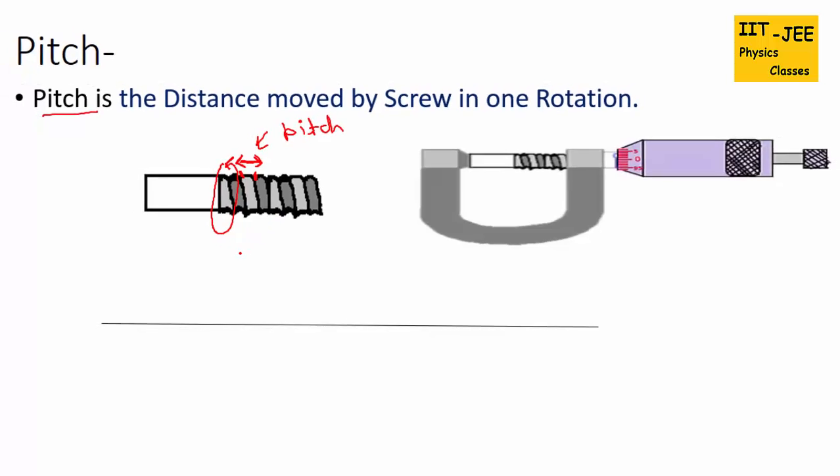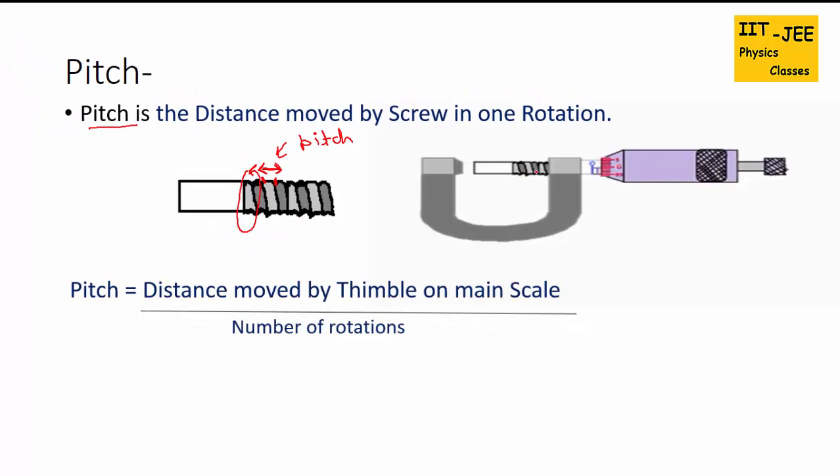So to find it what we do, we do 5 rotations on this screw gauge. So this screw will rotate 5 rotations: 1, 2, 3, 4, 5 rotations. And then we will note down the reading on the main scale. Like here reading is 0, 1, 2, 3, 4, 5 millimeters. This symbol moved 5 millimeters.